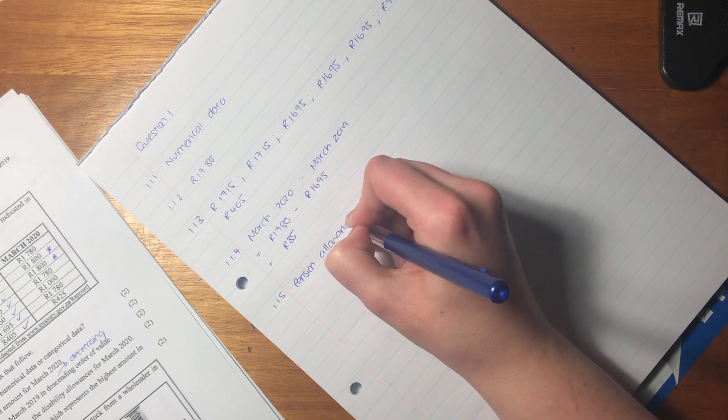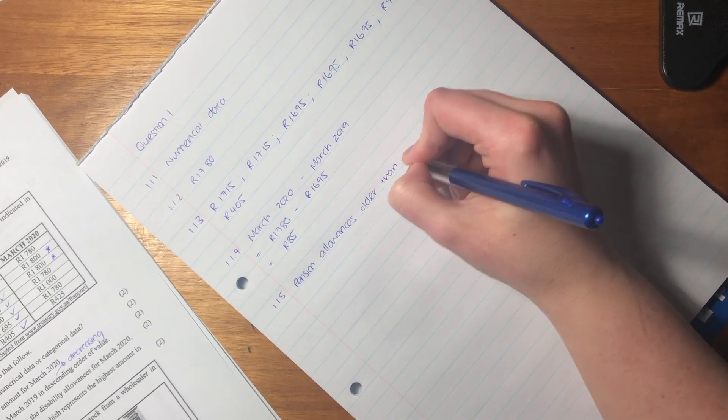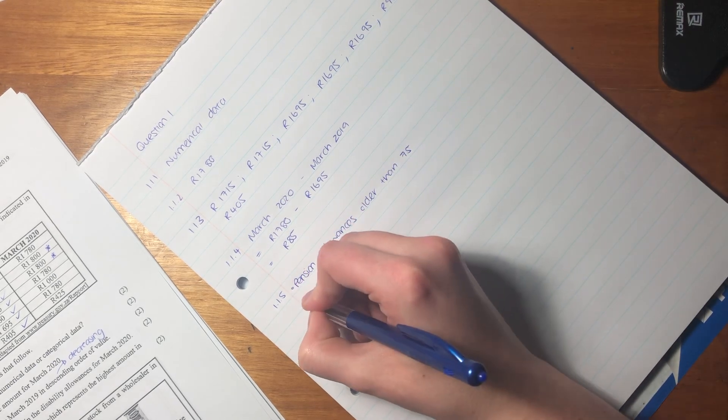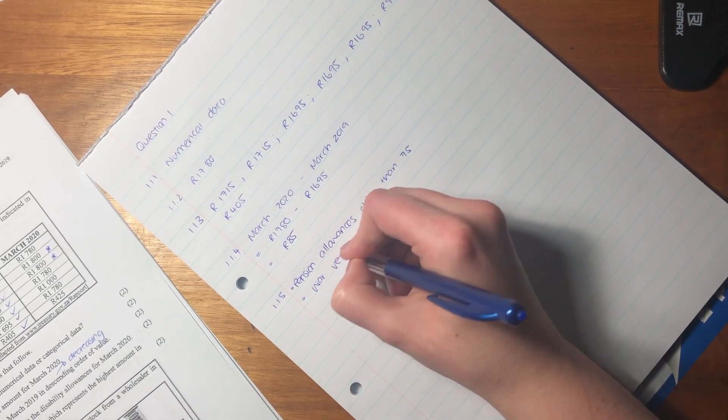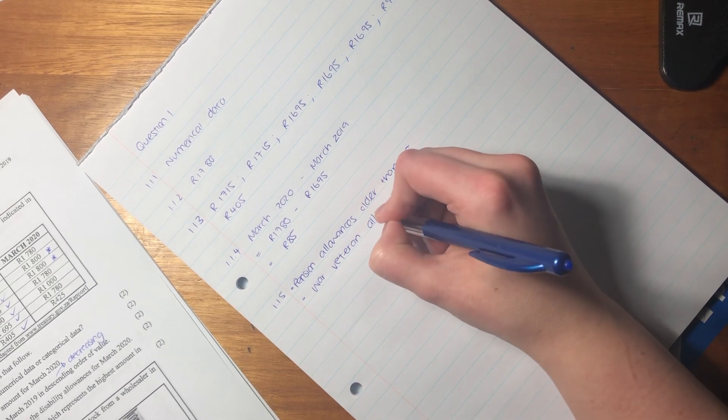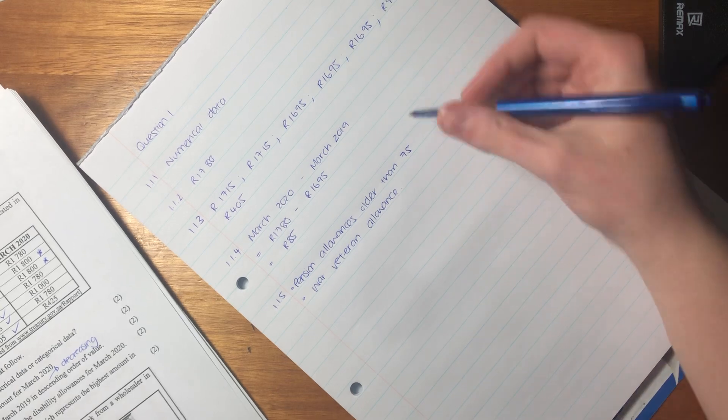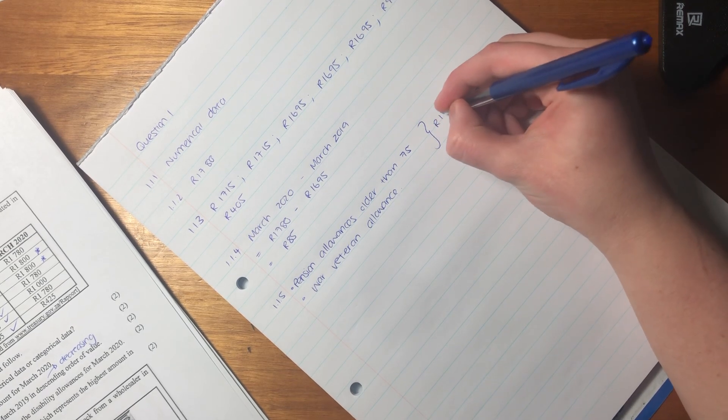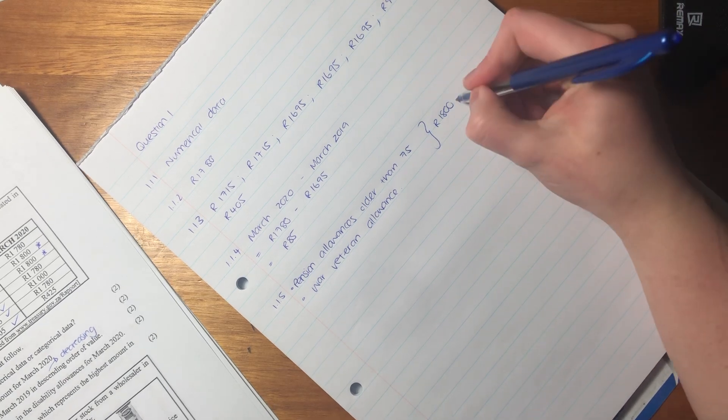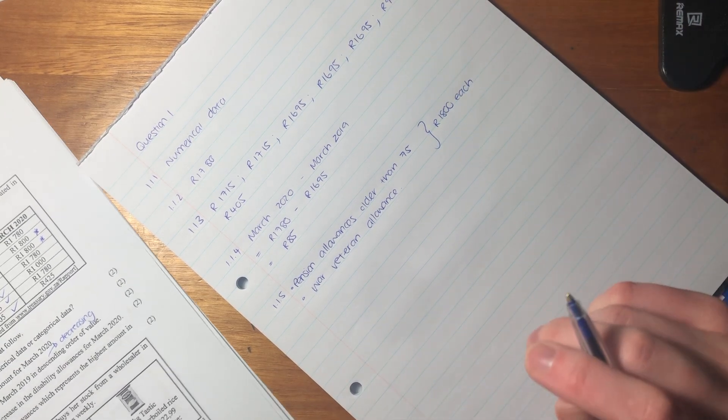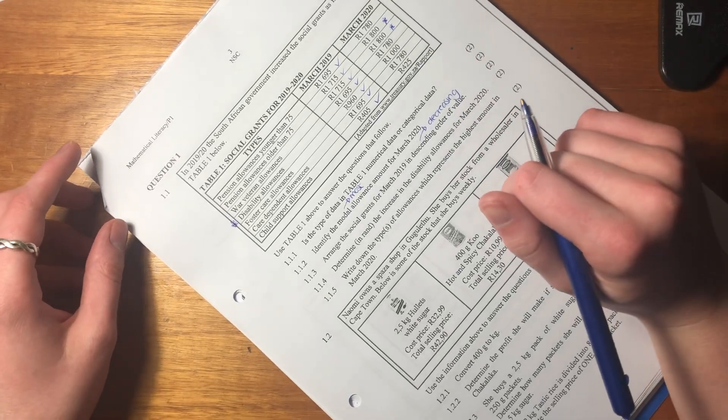I'm going to write those two down: pension allowances older than 75—these are basically for our most seasoned citizens—and then we have the war veteran allowance for those who fought for us, and they are the highest. You don't have to put this amount in, I'm just putting it in so that I know how much it is for each of them. We have now finished 1.1, 10 marks in the bag, easy peasy.